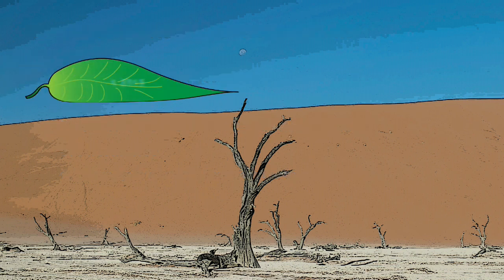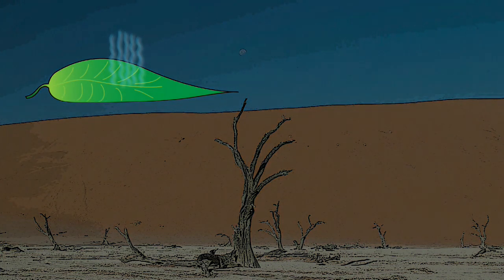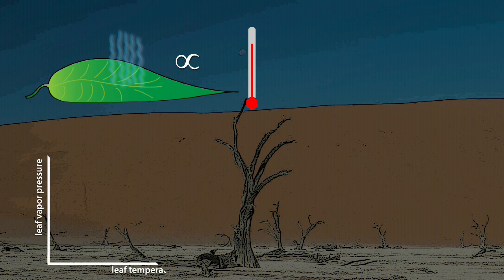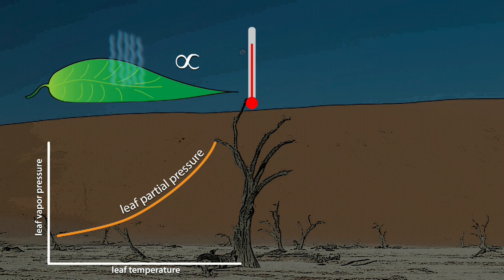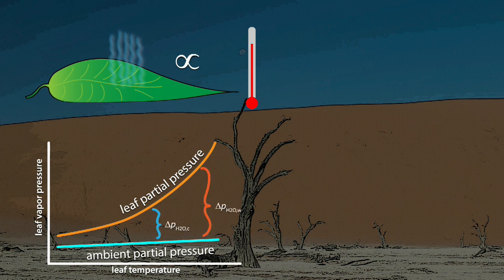Leaves evaporate water through transpiration. In turn, evaporation from the leaf is strongly driven by leaf temperature. This is because the water vapor pressure of the liquid water inside the leaf rises with leaf temperature. At higher temperatures, this makes for a higher partial pressure of water vapor at the evaporating surfaces of the spongy mesophyll, which increases the water vapor partial pressure gradient between leaf and atmosphere, which increases the evaporation rate from the leaf. Therefore, one simple way to minimize evaporation from the leaf is to keep leaf temperature as cool as possible.